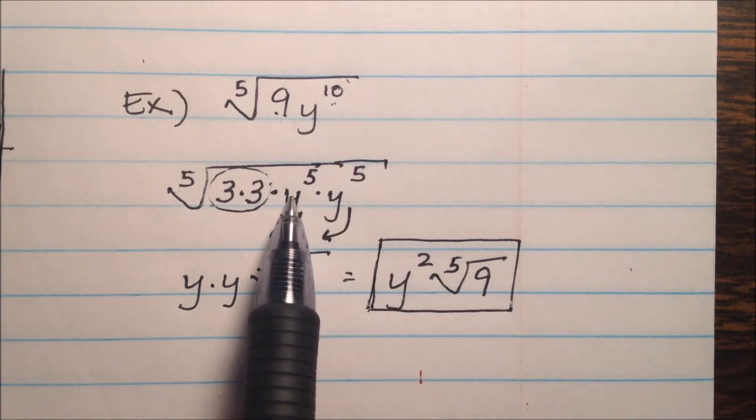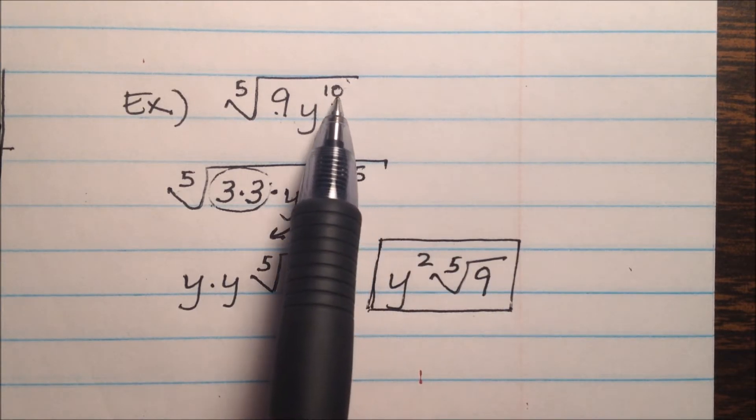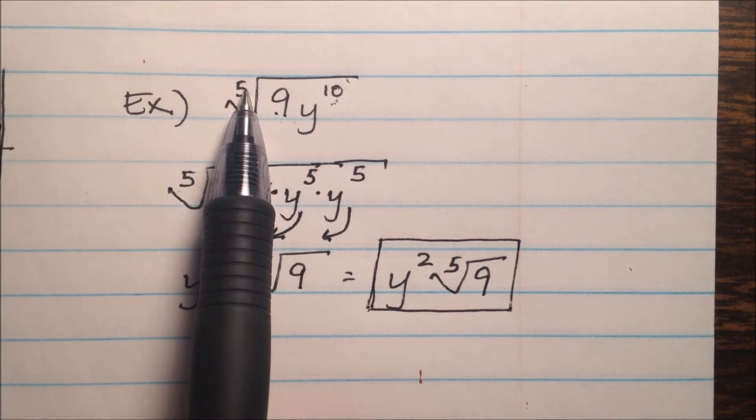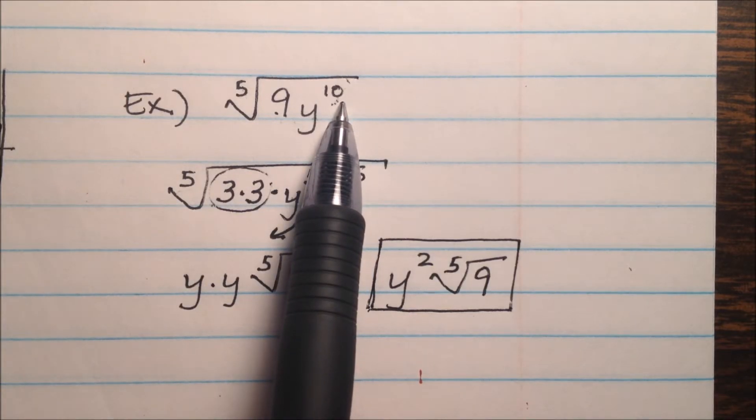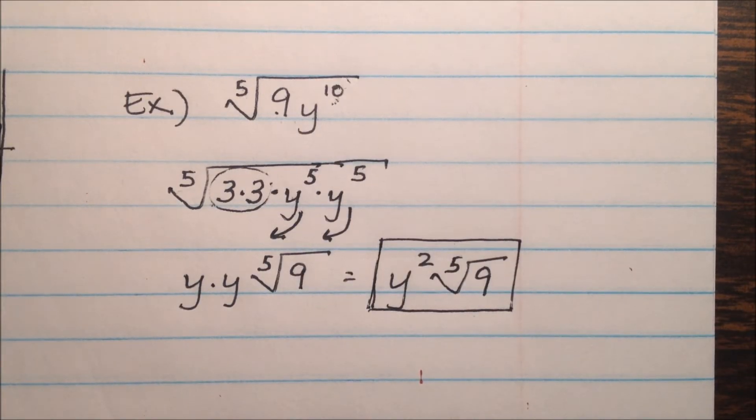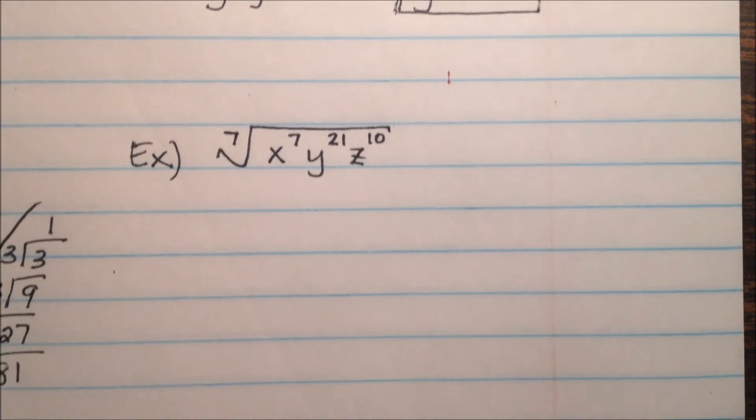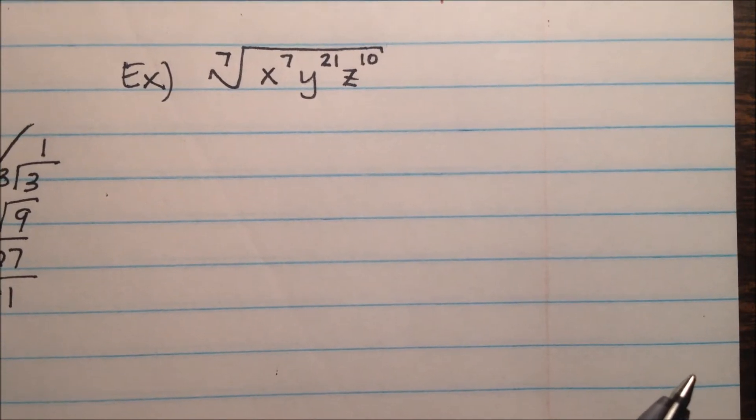So whenever you have your variables here, you can just take the exponent of the variable, divide it by your index, and that's how many will be on the outside. And in the next example, we'll look to see what happens if there's some left over.